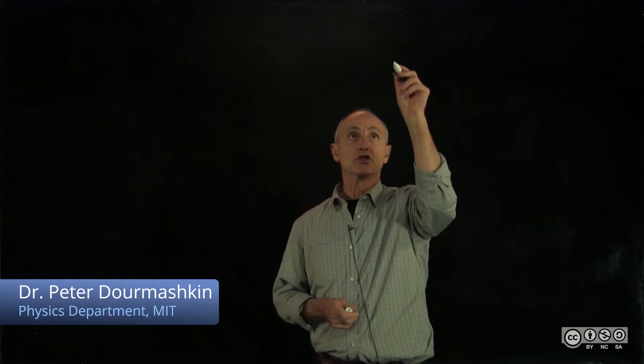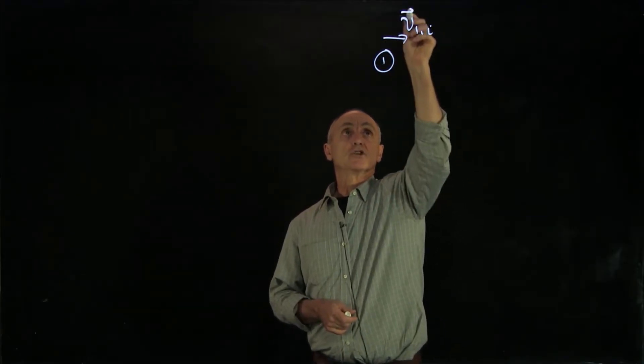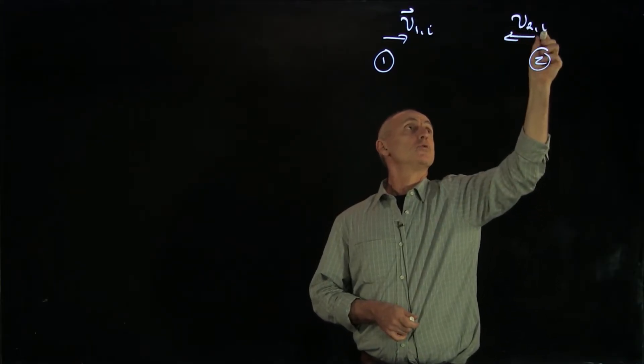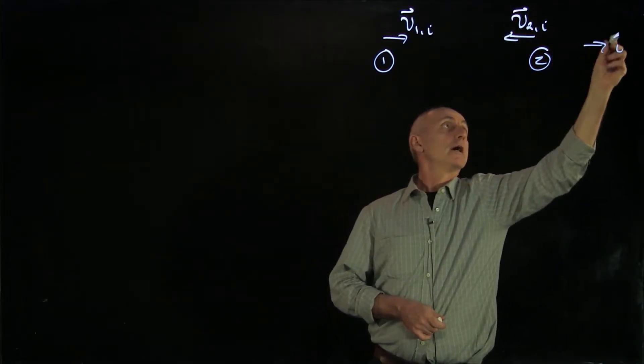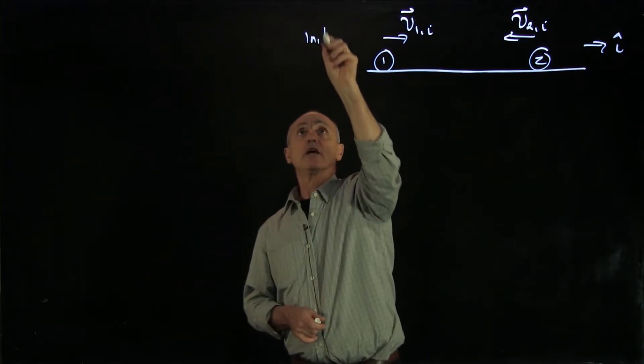Let's consider our one-dimensional collision again. Object 1 moving with velocity v1 initial, and object 2 moving with v2 initial. Let's call this our i hat direction. And this is our initial state.